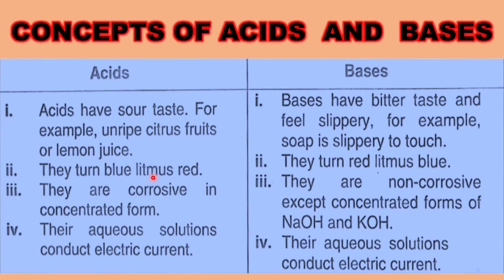The second concept about acids is that they turn blue litmus red. Litmus is a litmus paper which is dipped in a certain indicator. Litmus paper is an indicator used to test whether a substance is acidic or basic — it turns blue litmus red. Whereas in bases, the indicator turns red litmus to blue, changing the color from red to blue in a basic medium.